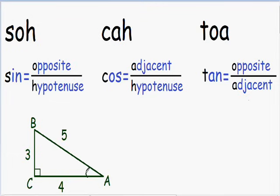The first side I always like to label is the hypotenuse. The hypotenuse is the longest side. The easiest way to find the hypotenuse is to go to the 90-degree angle and draw an arrow to the opposite side — that side is always going to be your hypotenuse. So I'm going to label the hypotenuse with HYP. Our side with the length of 5 is the hypotenuse.